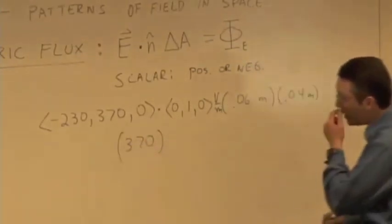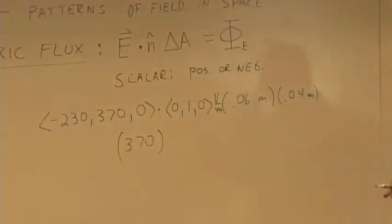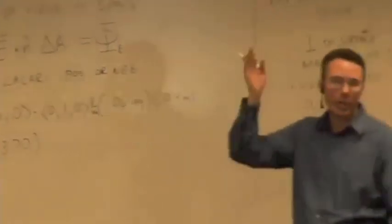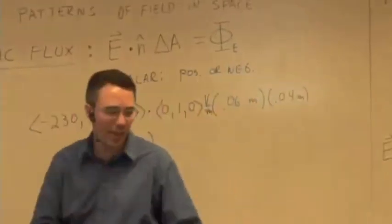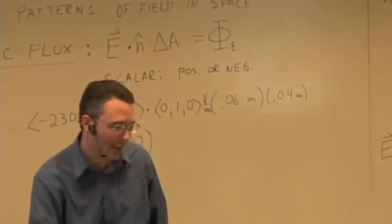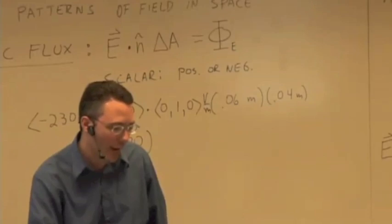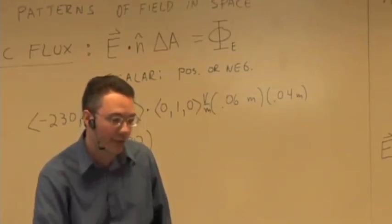So E dot n-hat is just, notice how it's just sort of picking out the component that is perpendicular to the surface. Negative 230 is in the negative x direction. That part doesn't matter. Only the y component, which is perpendicular to the surface, matters.